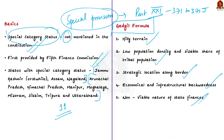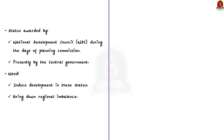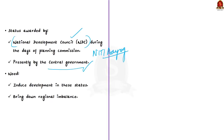Earlier, the decision to grant special category status was given by the erstwhile National Development Council, which existed during the Planning Commission period and comprised the Prime Minister, Union Ministers, Chief Ministers, and members of the Planning Commission. Now, with the Niti Aayog replacing the Planning Commission, the decision to grant special category status is taken by the central government.